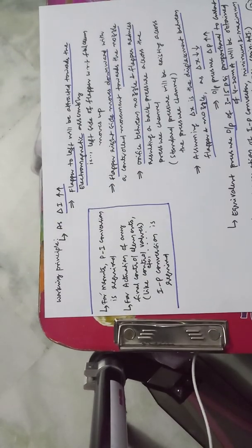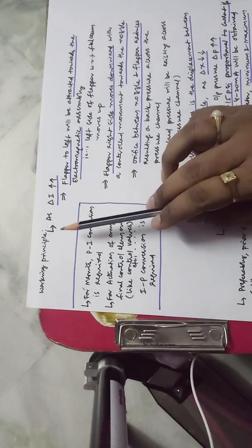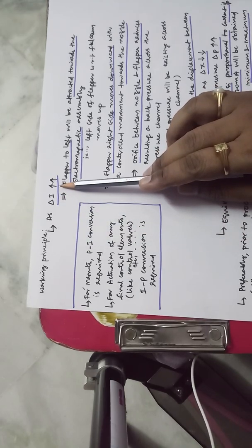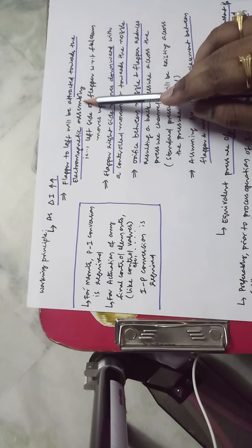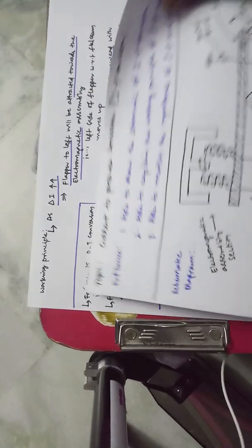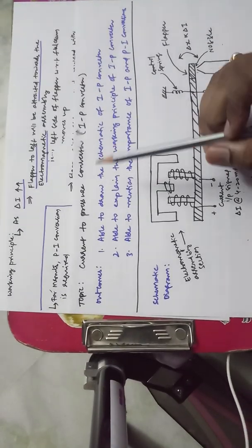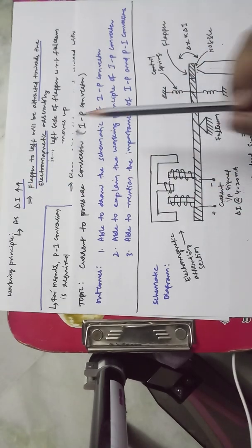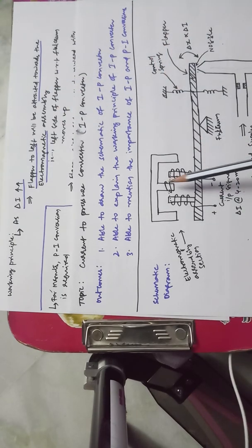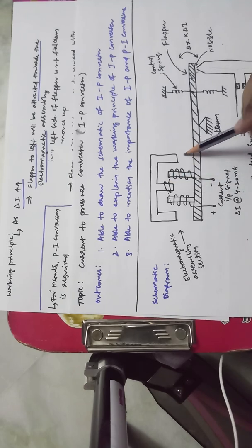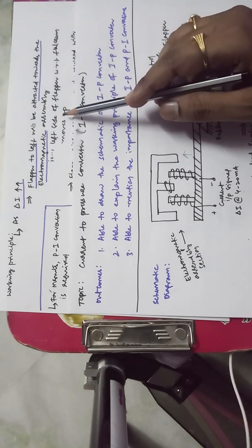Working principle: as delta i increases (that is, current is increased), the flapper to the left will be attracted towards the electromagnetic assembly. As delta i increases, this flapper is attracted towards the electromagnetic assembly. When this left side moves up, the left side of the flapper with respect to the fulcrum moves up.